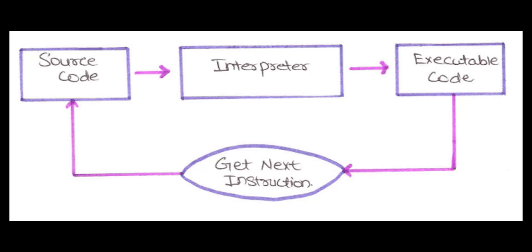That's why things like game engines and real-time operating systems are written in compiled programming languages. The two most common languages that are compiled are C and C++. Now let's talk about interpreted languages. These are translated using an interpreter, which goes line by line or statement by statement, translating each line and then executing it.